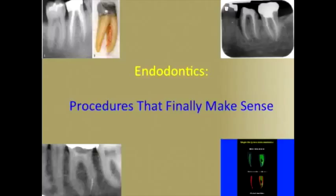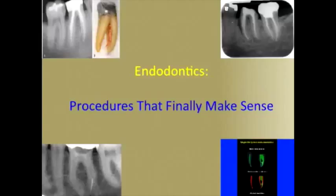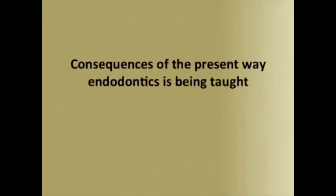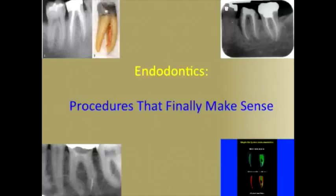Much of what has been introduced into endodontic instrumentation has produced results that weaken the tooth and subject the instruments to increased chances of separation. This should simply not be the case. The last concern should be separation. Canals can be well cleansed without sacrificing the excessive amounts of dentin that result from greater-tapered instruments. Safety for the instruments should never be the reason dentin is removed, yet that is the situation that exists today. This lecture's main goal is to shed light on options that virtually eliminate instrument separation, preserve far more dentin, and do so in a time- and cost-efficient manner.